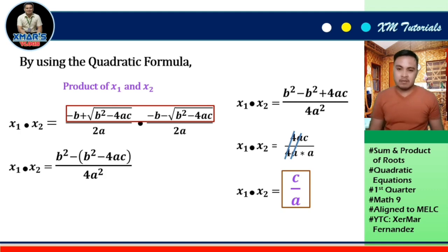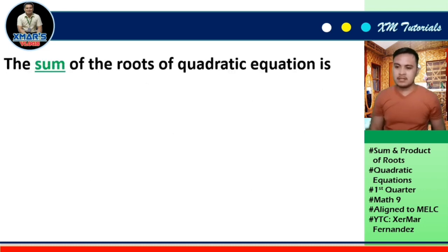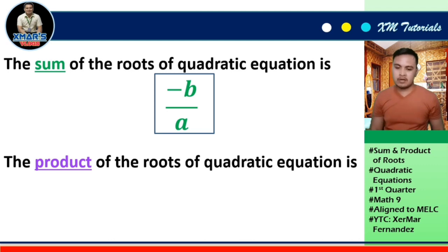What can you say about the product of the roots of a quadratic equation in relation to its coefficients? Based on the result, the product of the roots of a quadratic equation equals the constant term divided by a. To summarize: the sum of the roots is -b/a, and the product of the roots is c/a.